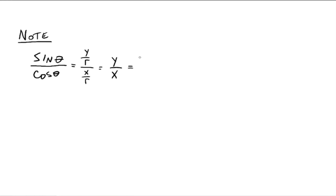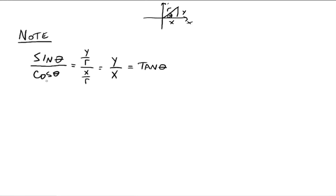And y over x is defined to be tangent of theta. Remember, using our little triangle — there's x, there's theta, that was y, and that was r from the previous video. So tangent theta can be written as sine of theta divided by cosine theta. And therefore, cotangent theta, being the reciprocal of tangent, is cosine theta divided by sine theta.